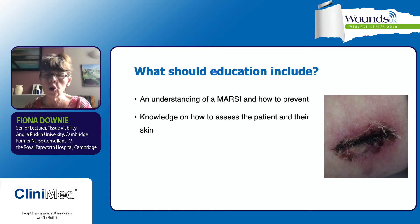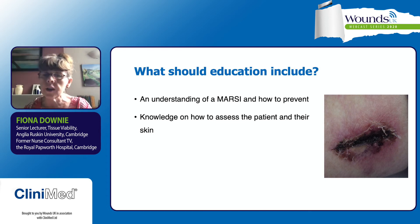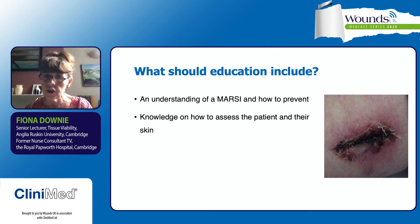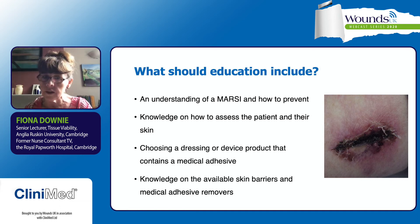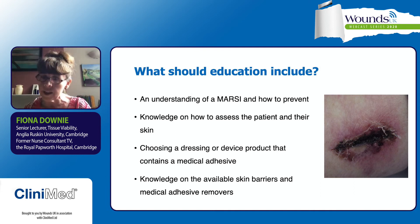Education should include an understanding of MARSI and how to prevent it, as well as knowledge of how to assess the patient and their skin. Looking at this picture, you can see a small surgical wound — note the peri-wound skin showing redness and dryness in a patient with an underlying vascular condition. They're very much at risk of skin stripping, MARSI, and infection. We need to be very careful when choosing a dressing or device, and most importantly we need to protect the skin before applying the adhesive and use a remover afterwards.